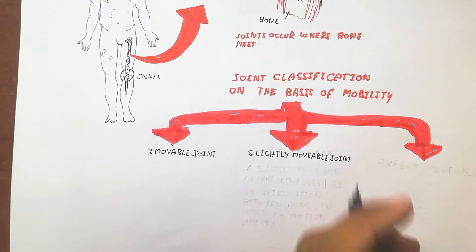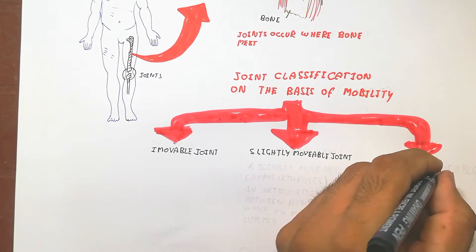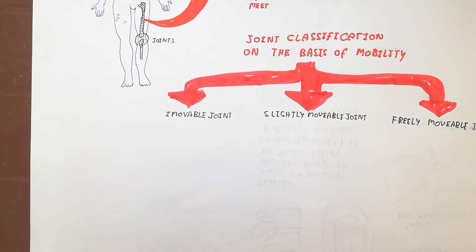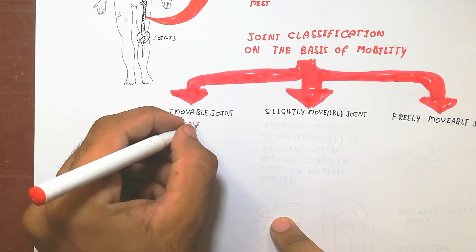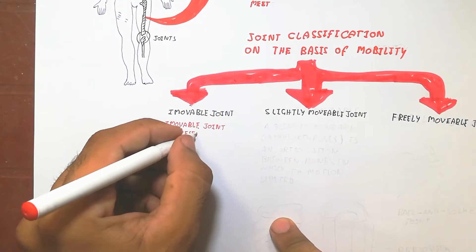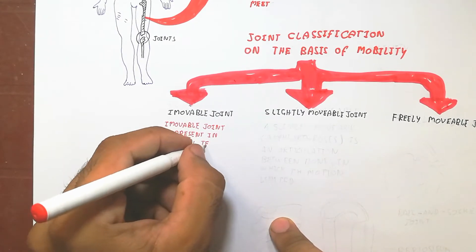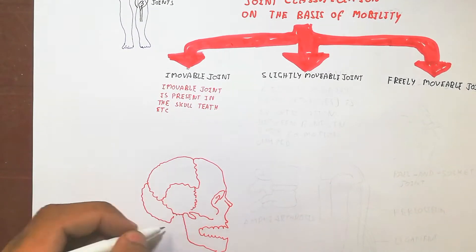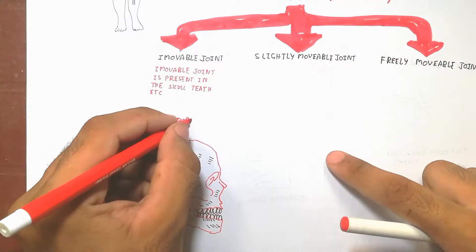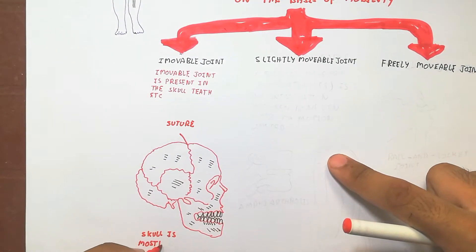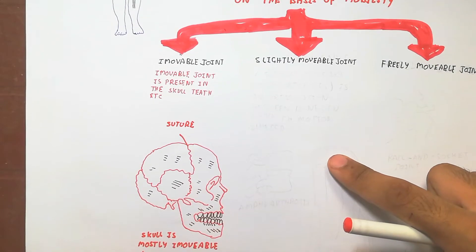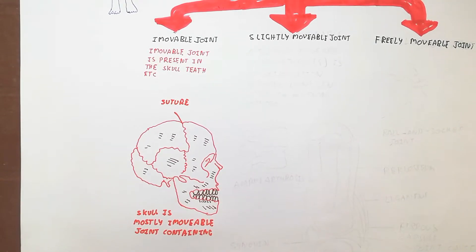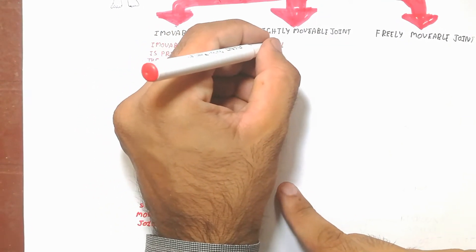Immovable joints mean there is no movement occurring at that joint. These joints are present in the skull. The skull is the upper part that covers the brain, and the bone surrounding the brain is known as the cranial bone. These immovable joints are known as fibrous joints, and cartilage joints are also present. The skull is mostly an immovable joint-containing bone.